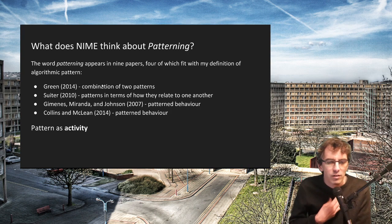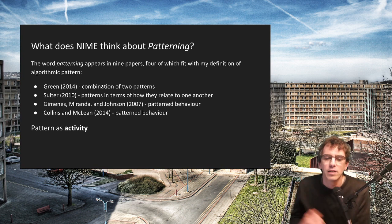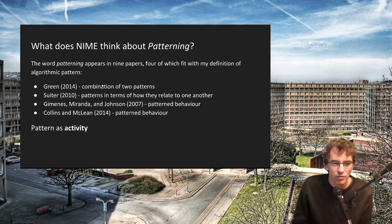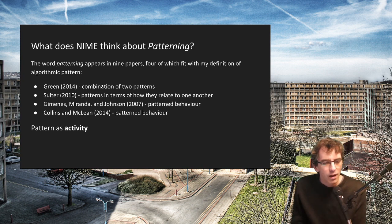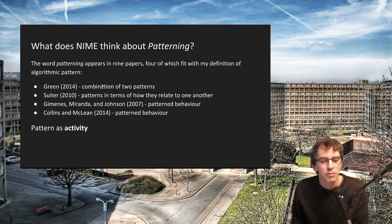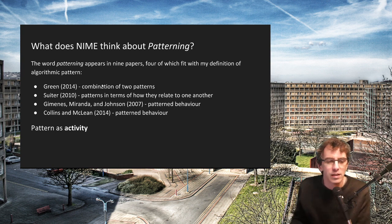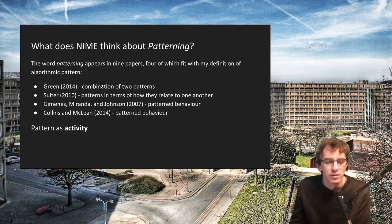I looked a bit harder, so I had a look at the word patterning and found that was used nine times. Because I was looking for activity, I thought that looking for the gerund would be a good idea, and I found four which actually fit my definition of algorithmic pattern. One definition was the combination of two patterns — this referred to, I guess, interference patterns — and others talked about how they relate to each other, or as patterned behavior, so as patterned activity, focusing on the actual making process rather than just the fixed sequence of the end result.